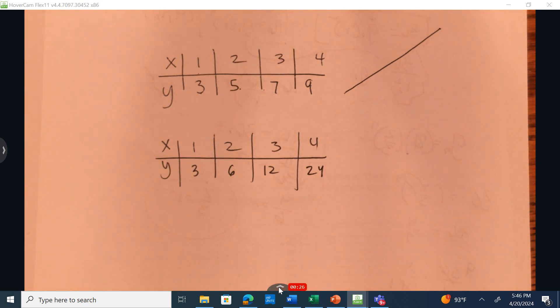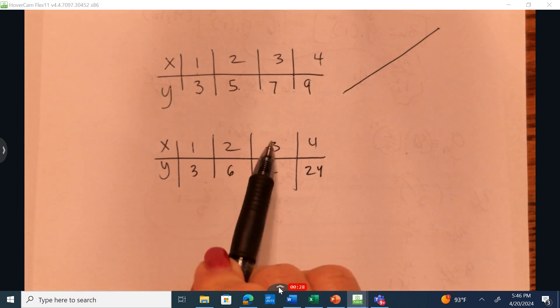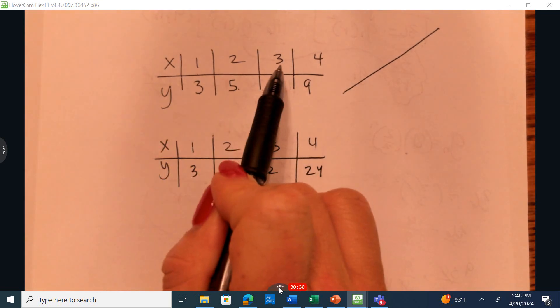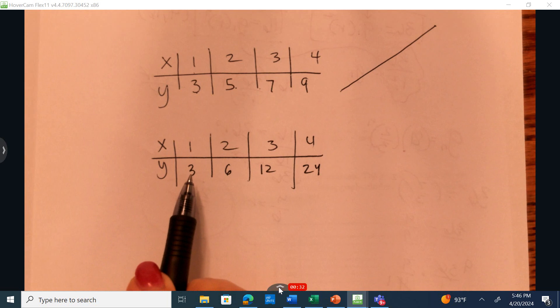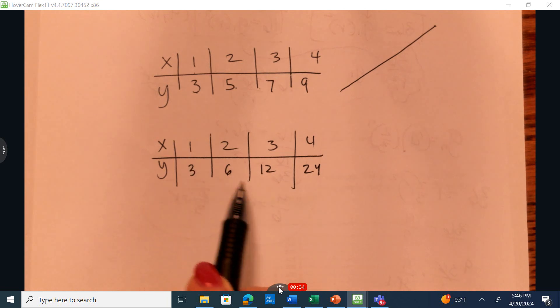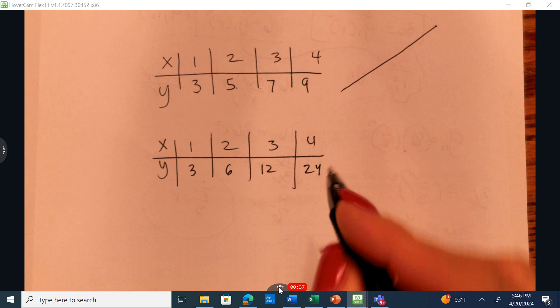What's different about the second function? The x's consistently go up by 1, just like the first function. But down below in the y's, you're being multiplied by 2. This is an example of an exponential function.